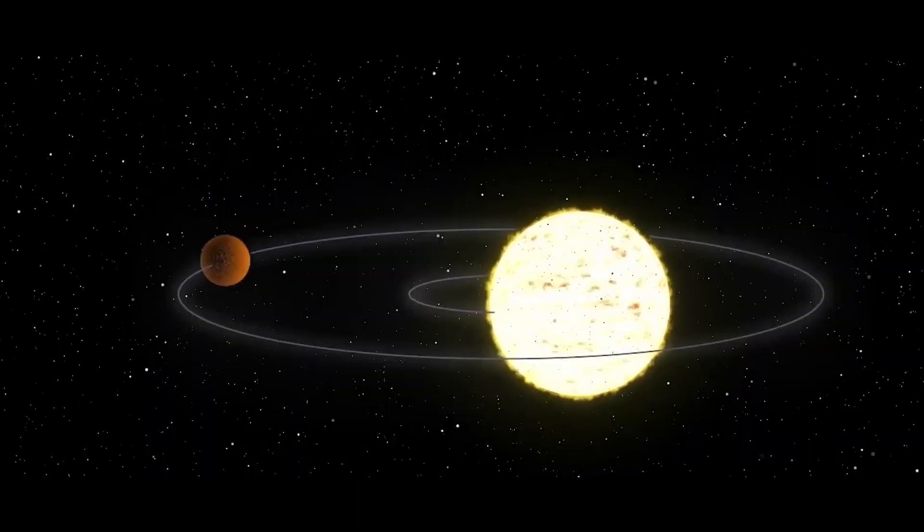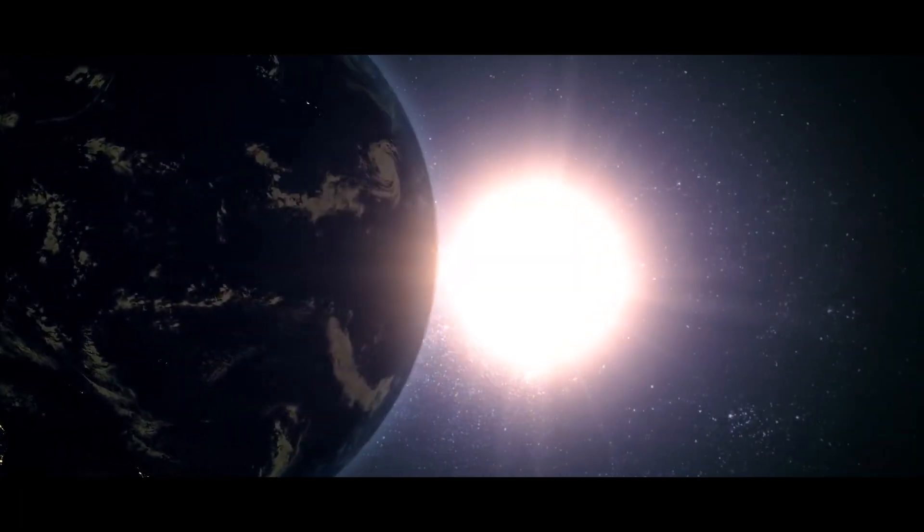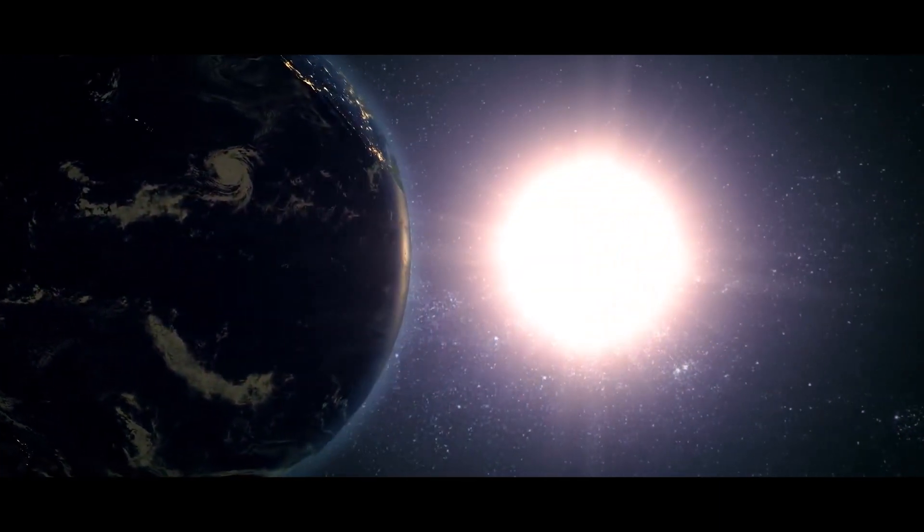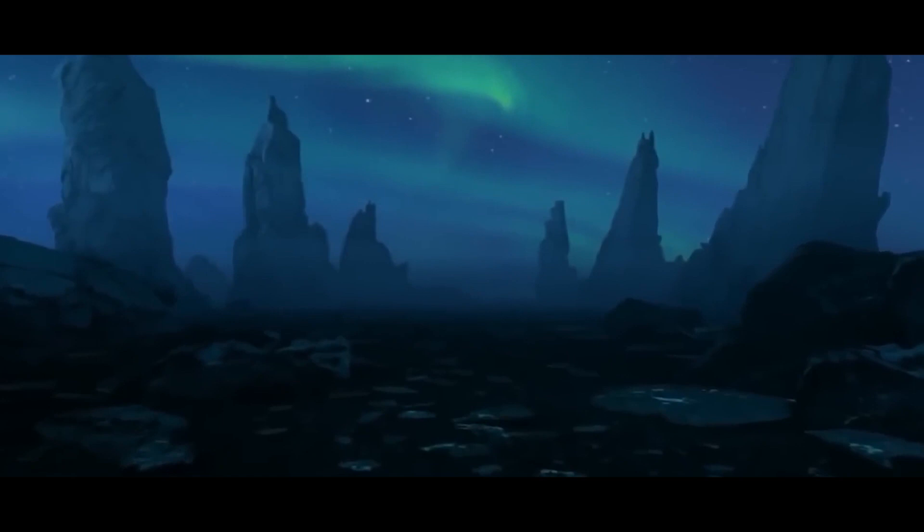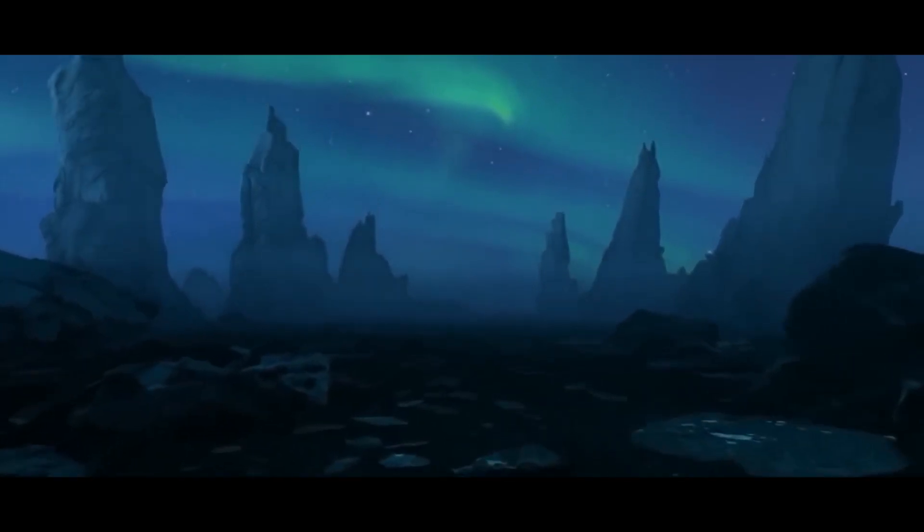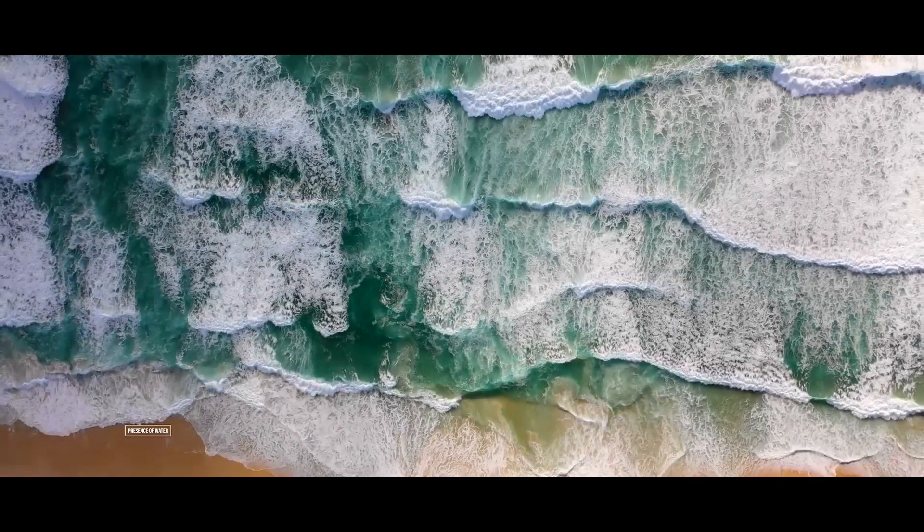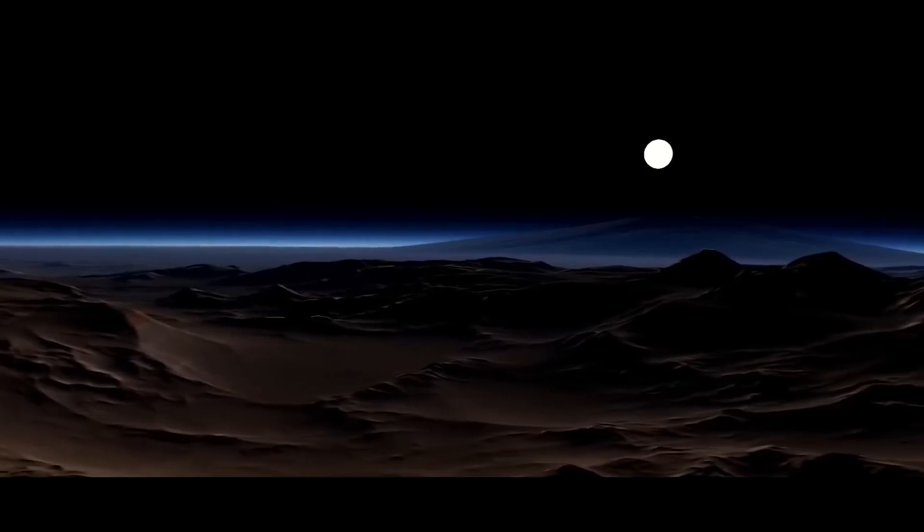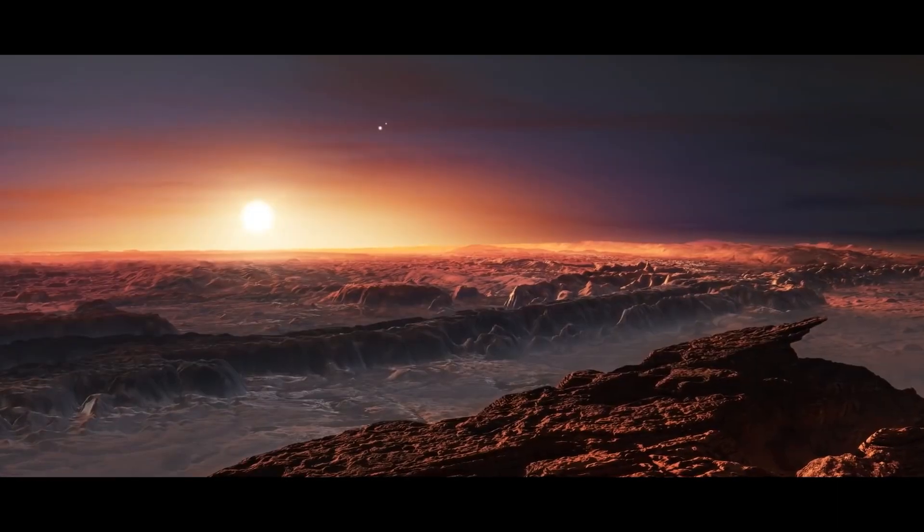Do scientists now believe that Proxima Centauri, which is 44,000 times fainter than the Sun, will host life? Proxima B's surface is thought to be in the habitable zone, which permits the presence of water. They also imply the existence of earthly ground, such as mountains.